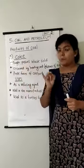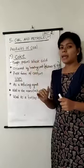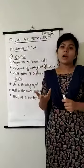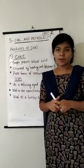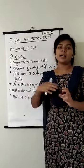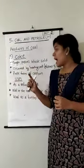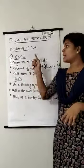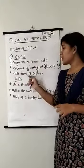Coke is a tough, porous, black solid obtained by heating coal in the absence of air. Coal gas and coal-tar are also obtained this way. When coal is heated, coal gas and coal-tar are eliminated and the remaining black residue is coke. This residue contains 98% carbon, which is why coke is considered a pure form of carbon.